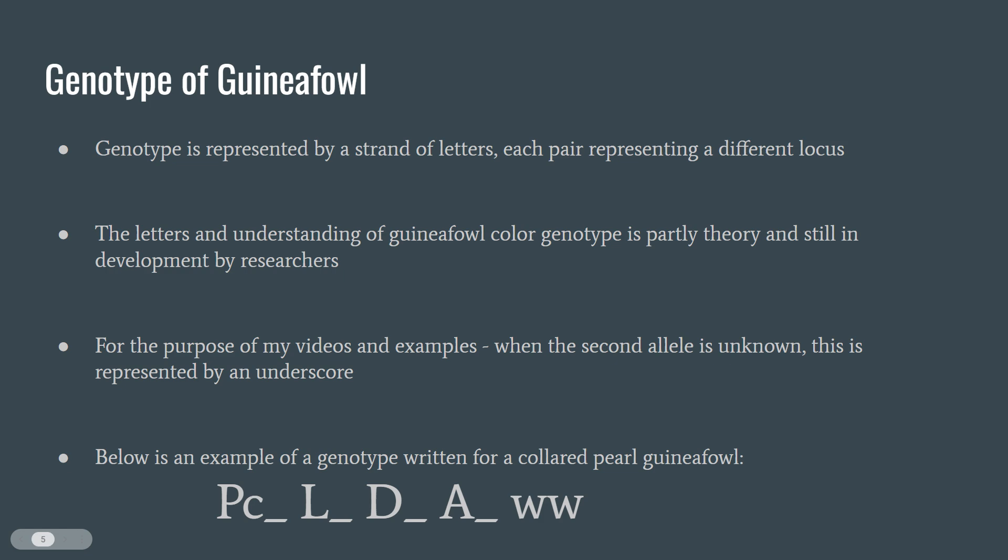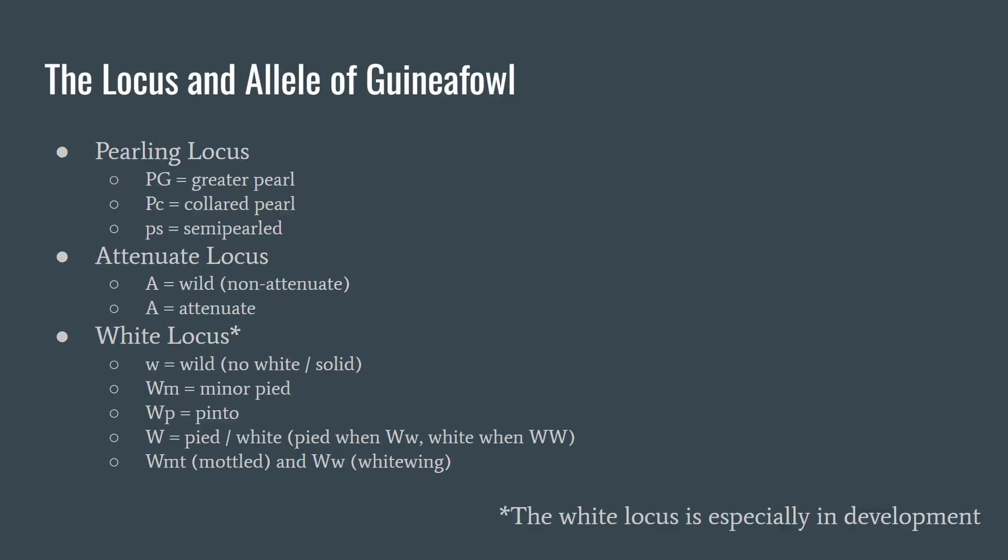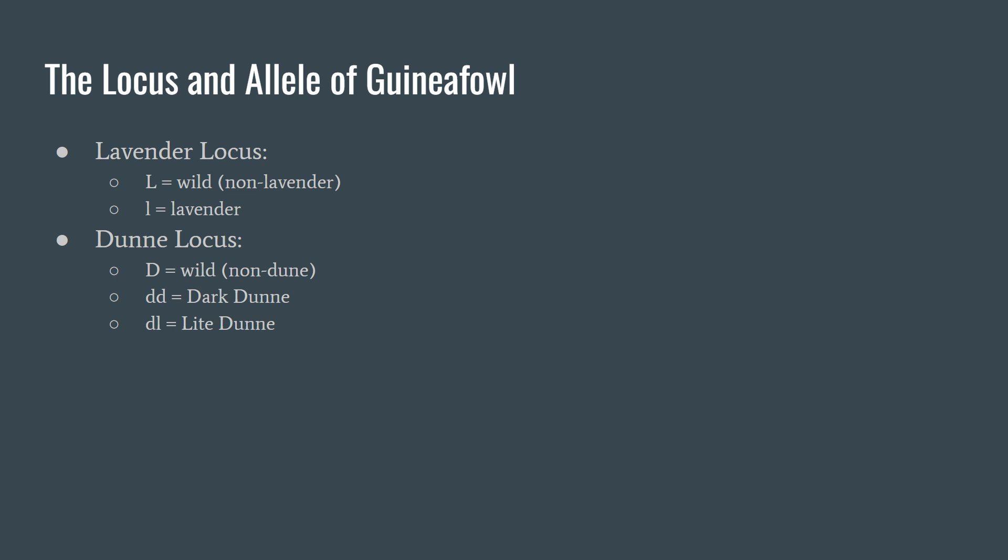Below is an example of a genotype written out for a collared pearl guinea fowl. The next two slides show the different loci and alleles of guinea fowl. As mentioned before, these letters and the meaning behind them are subject to change as more research is done. This is especially true for the white locus, where more intensive research is needed to cover the different types of alleles. You can pause if you want to read — I will go in depth about these and show examples of all these color combinations in future videos. Remember, the recessive alleles will be shown with a lowercase letter while the dominant alleles will be shown with a capitalized letter.